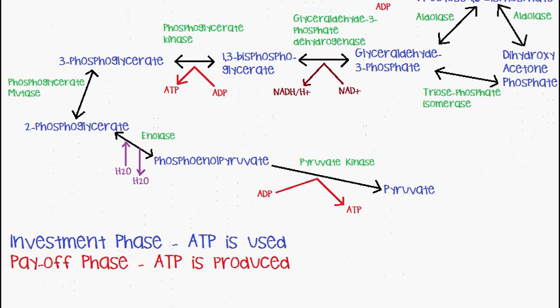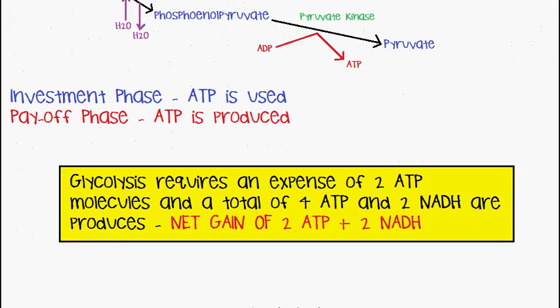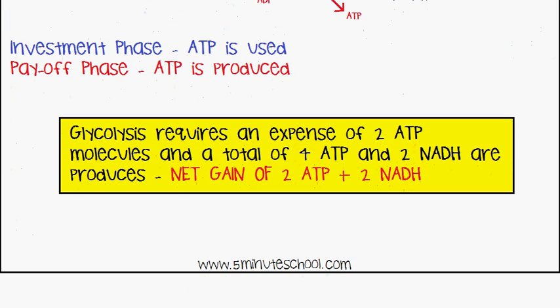To summarize: in the investment phase, ATP is used; in the payoff phase, ATP and NADH are produced. Glycolysis requires an expenditure of 2 ATP molecules, while a total of 4 ATP and 2 NADH are produced. This gives a net gain of 2 ATP and 2 NADH.